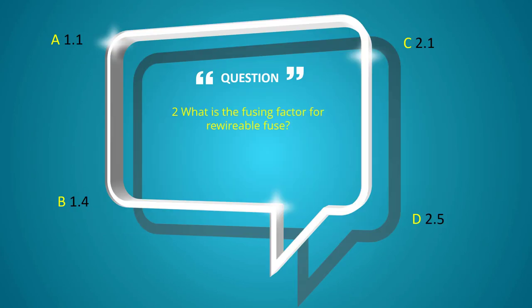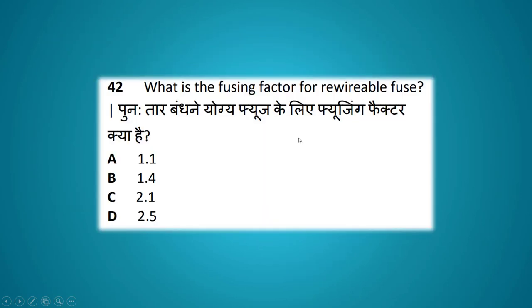What is the fusing factor for a rewirable fuse? Options: 1.1, 1.4, 2.1, 2.5. The answer is 2.1.